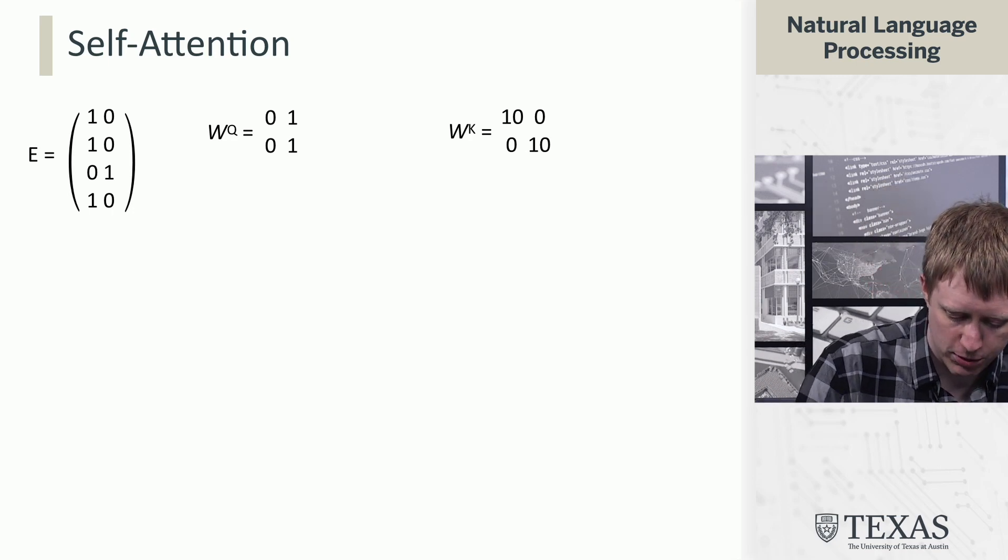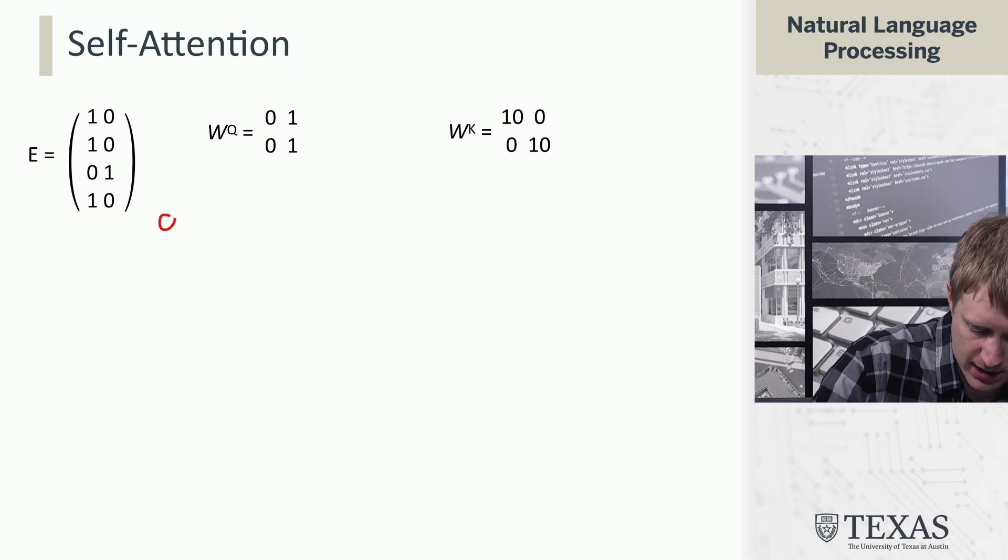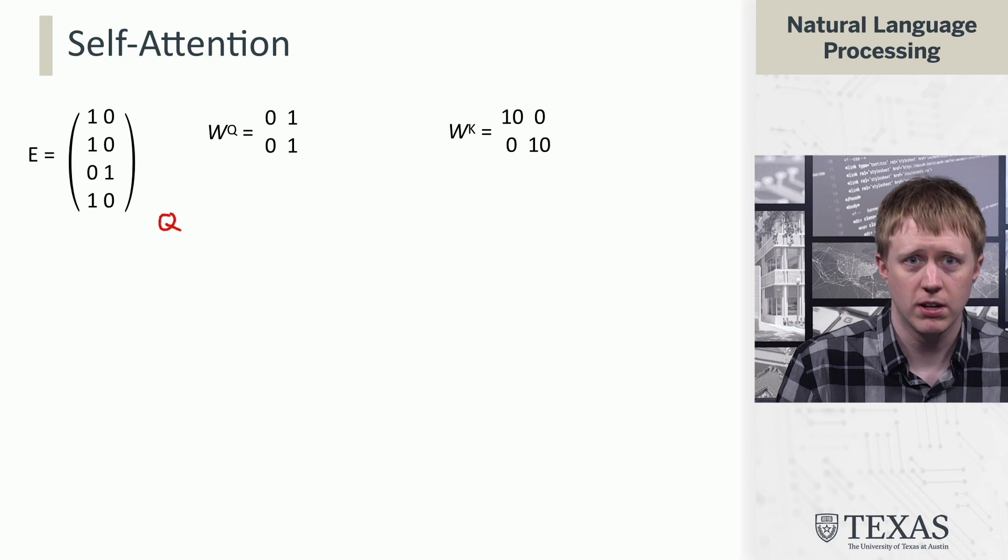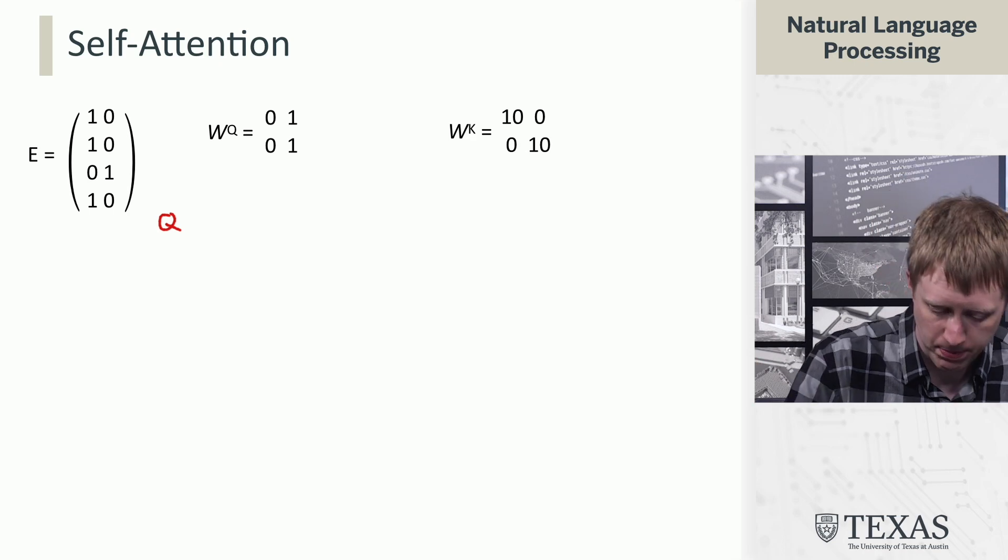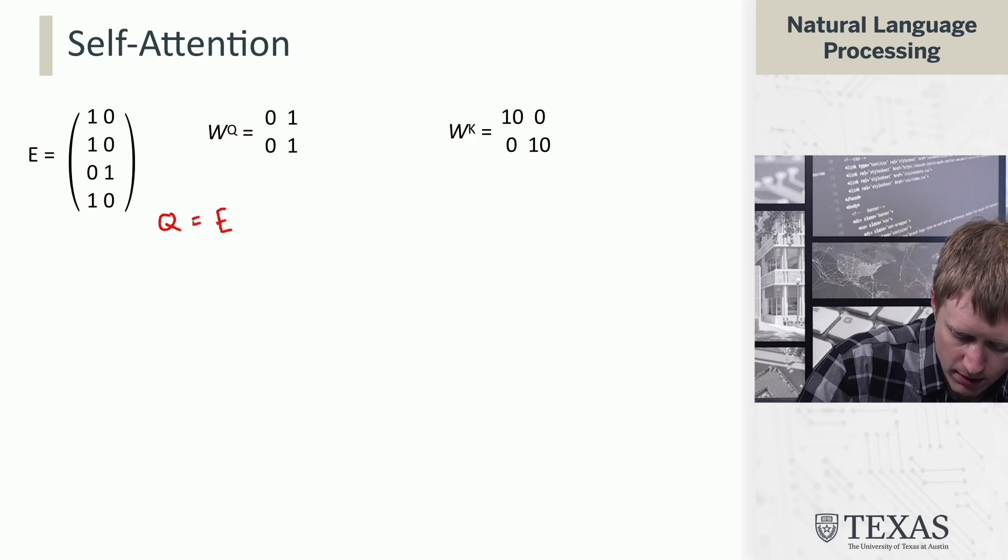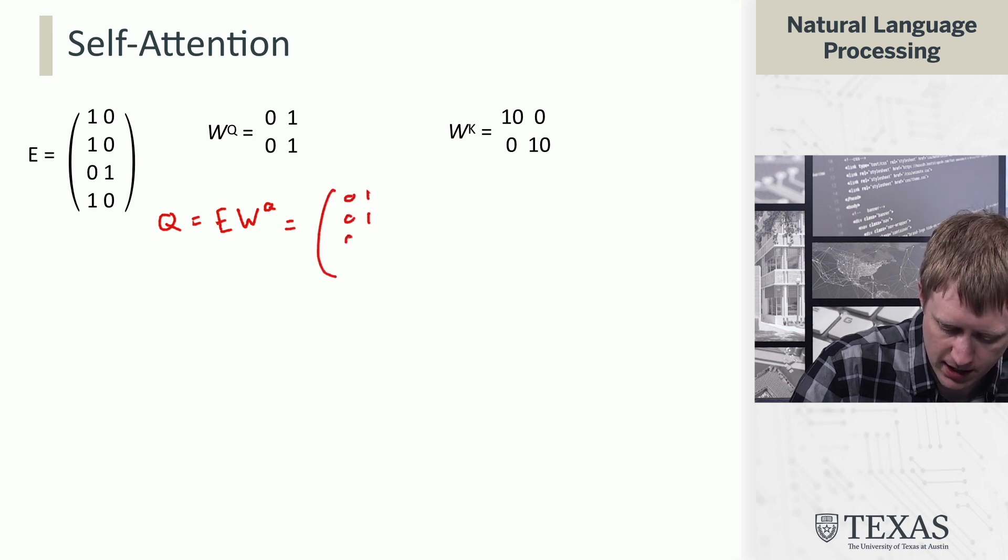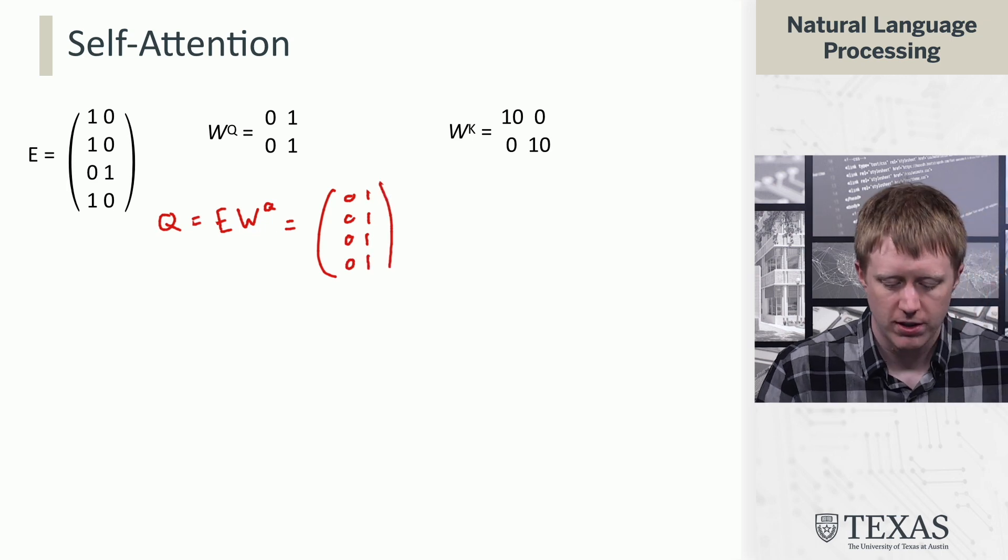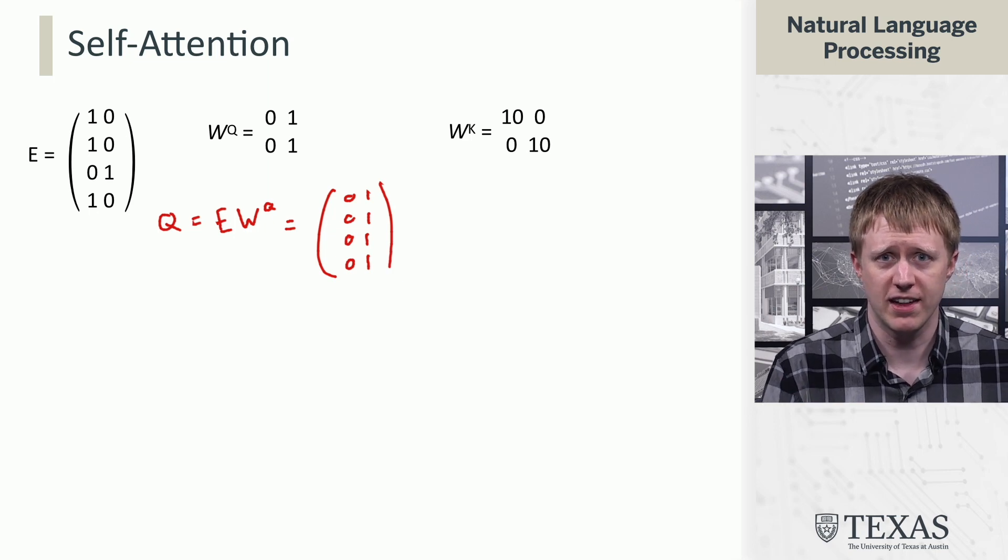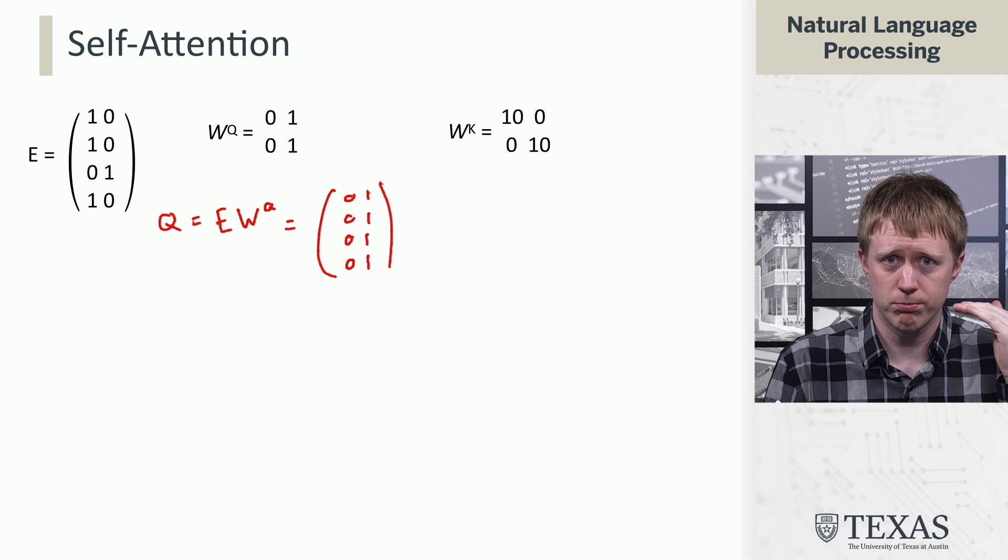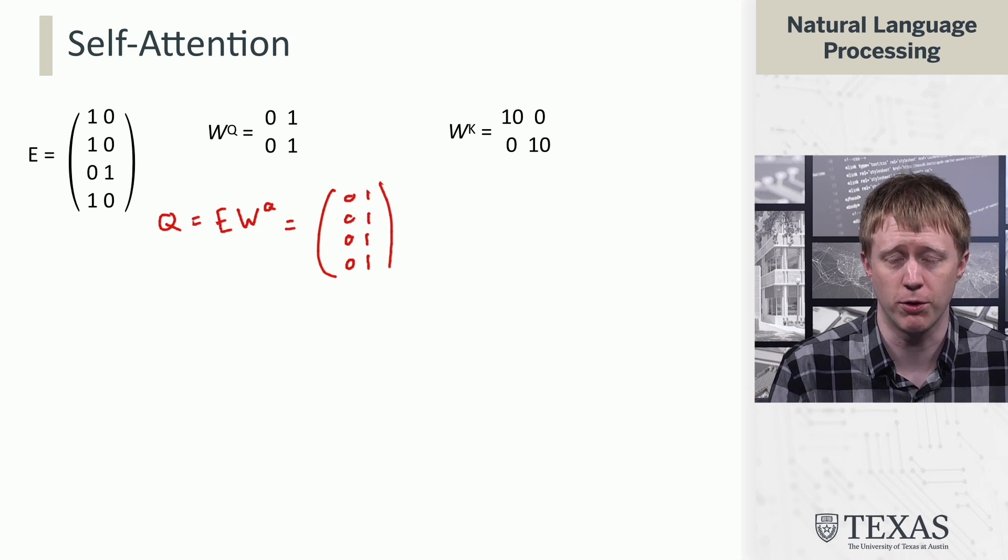Let's go through what happens in each of these steps. The first thing we do is compute our matrix Q based on the embeddings being multiplied by WQ. What that gives you is a matrix where every row is the same. The semantics of this is that every single token is going to be looking for, are there other Bs around? That's our objective here if we're thinking about making predictions.